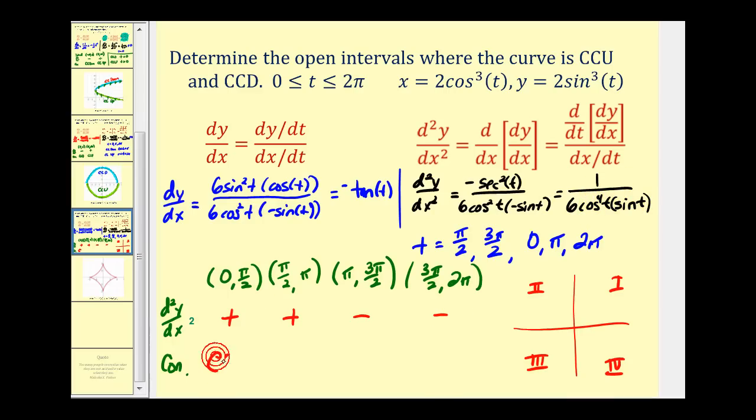So now we know that it's concave up on this interval, concave up on this interval, concave down on this interval, and concave down on this interval. So quadrant one and two should be concave up. Quadrant three and four should be concave down. Let's take a look.